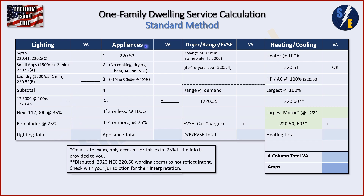Then we're going to take some demand factors and come over to the lighting total. Next, we're going to go to appliances and list those out with the nameplates. These are going to exclude any cooking, dryers, heat, AC, and EVSE. Anything less than a quarter horse and 500 watts will be taken at 100% regardless of how many you have. If we have three or less, everything gets taken at 100%, but if you have four or more, you can take everything at 75%, except for loads less than a quarter horse and 500 watts.